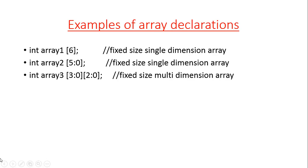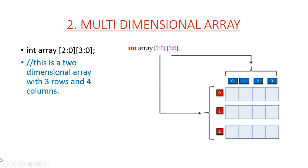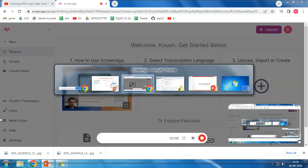An array can be of different dimensions and of fixed size or variable size. We can also have multidimensional arrays. This is a 2-dimensional array with 3 rows and 4 columns. The array declaration is also shown — 'array' is the name of the array. We can give any name, and the dimensions are declared to be 3 rows and 4 columns.